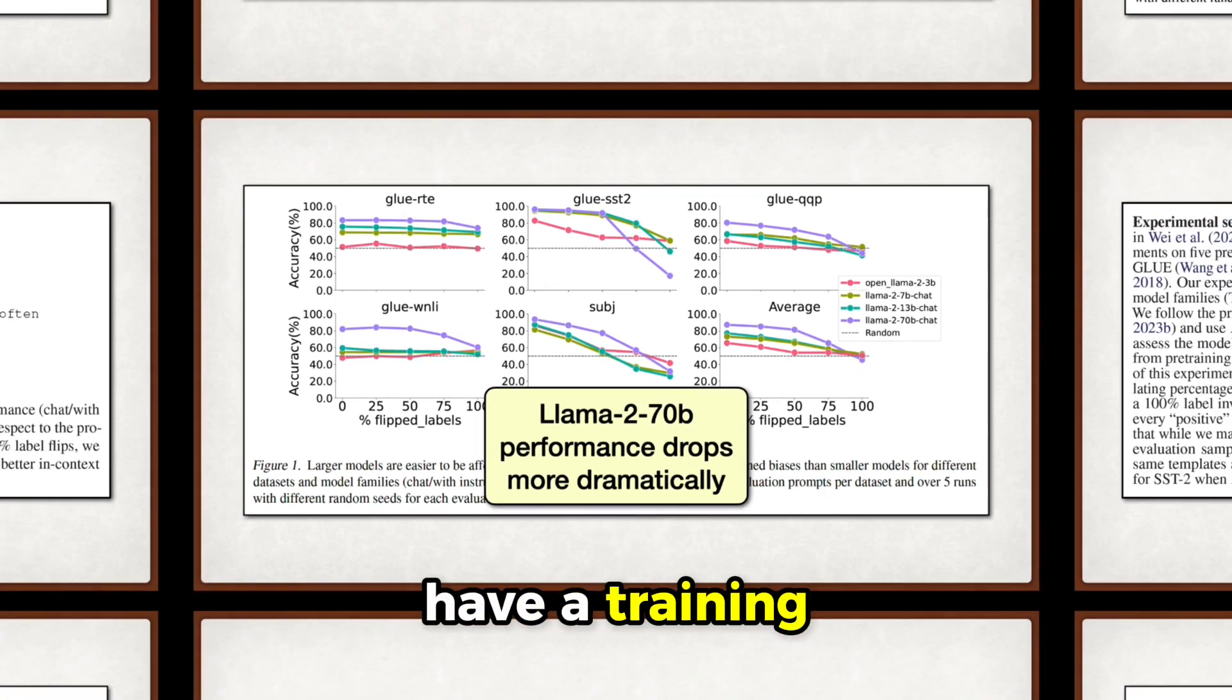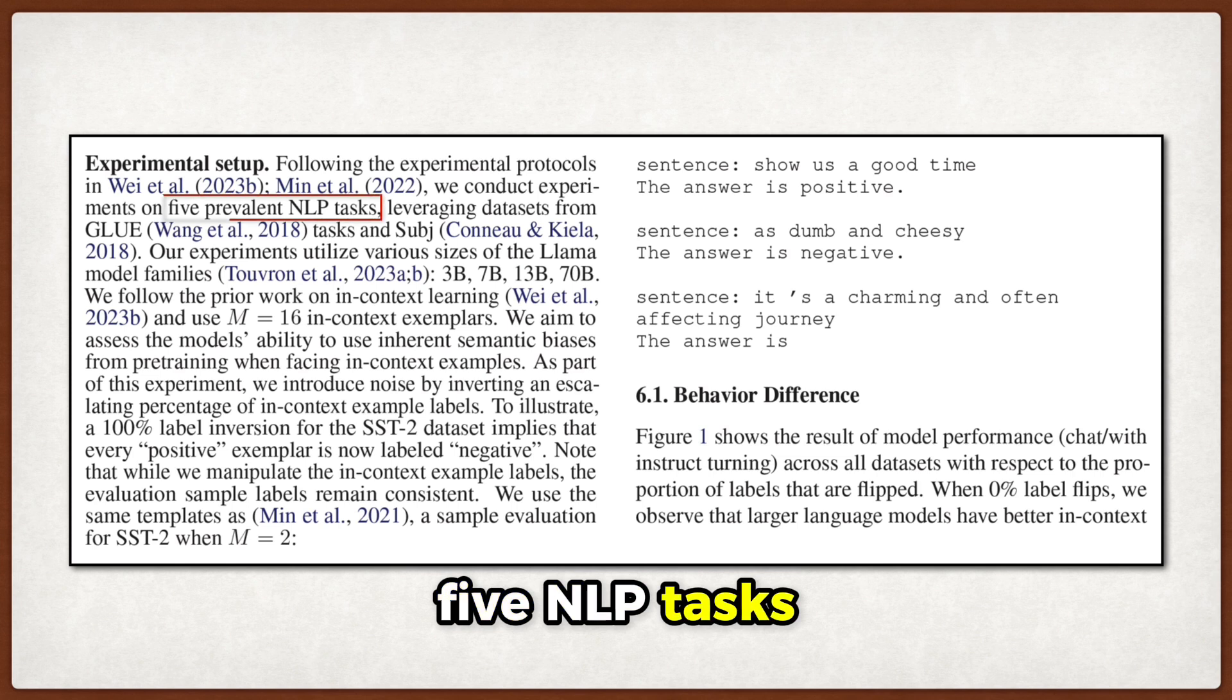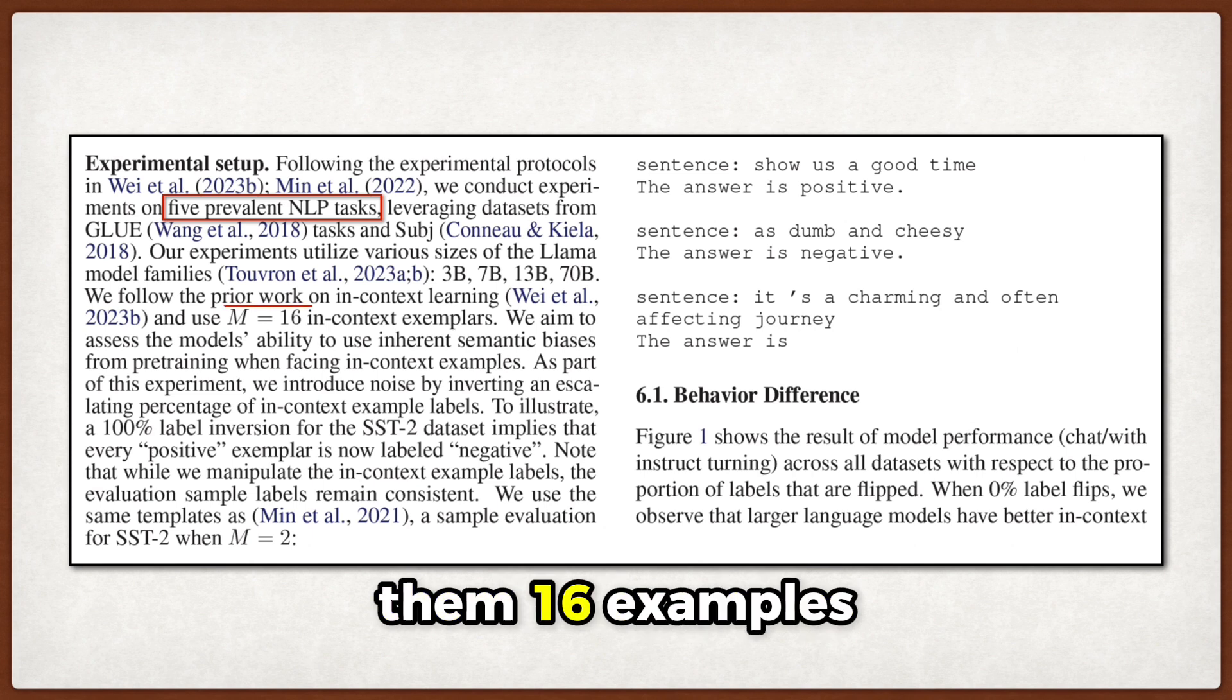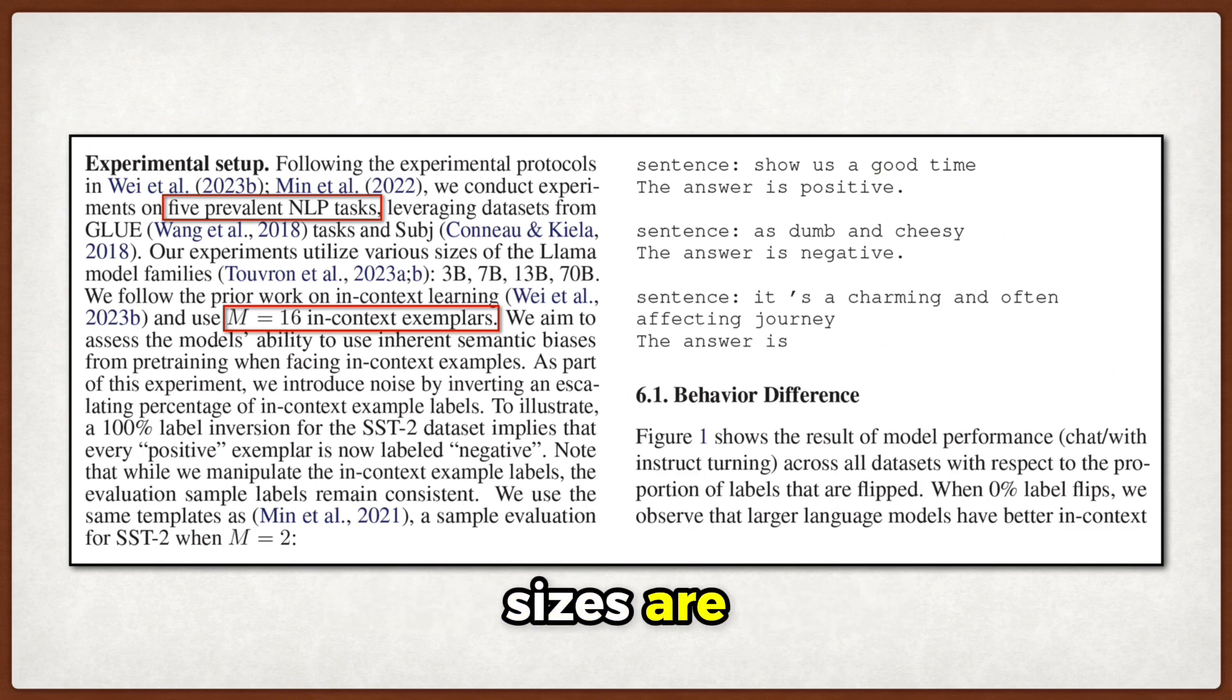They don't really have a training dataset per se since they're analyzing pre-trained models, but they use 5 NLP tasks from Glue and the SubJ dataset for their experiments where they test models by giving them 16 examples and then flipping various percentages of the labels to see how robust different model sizes are.